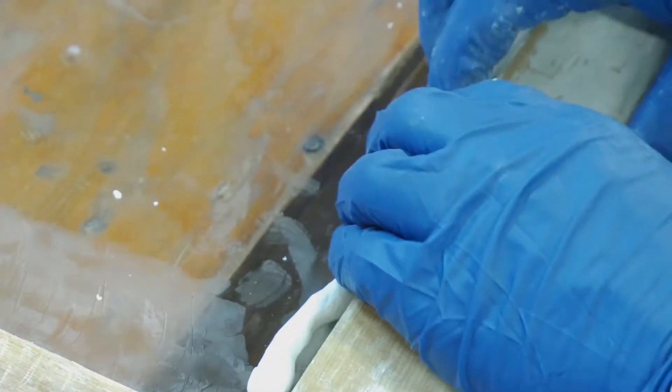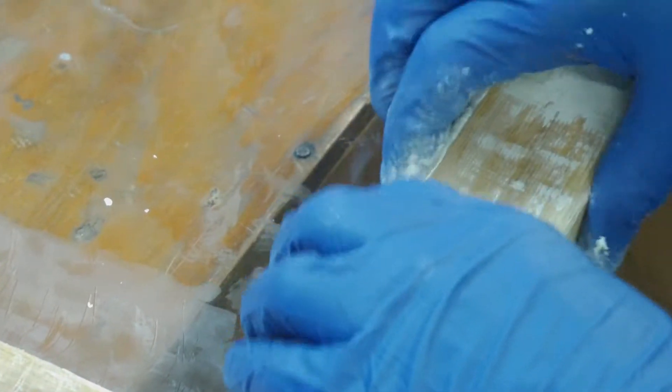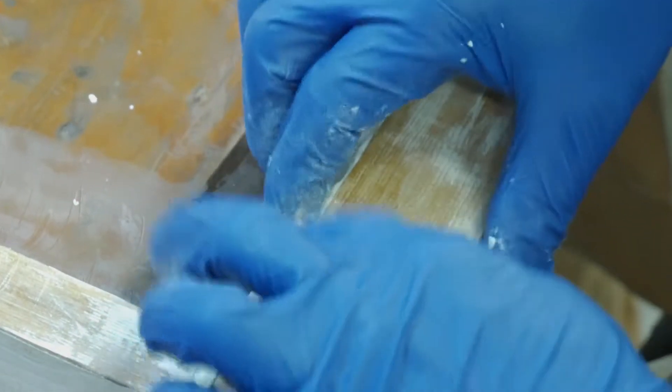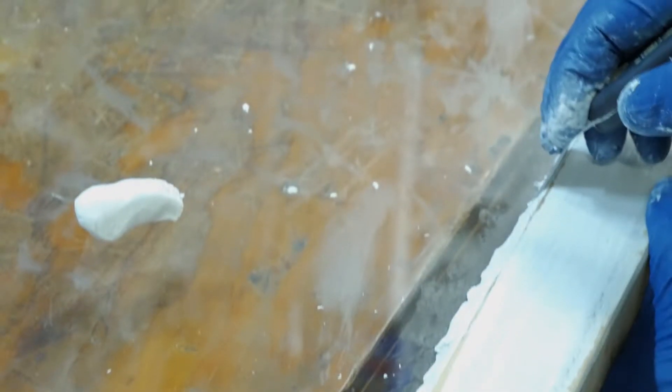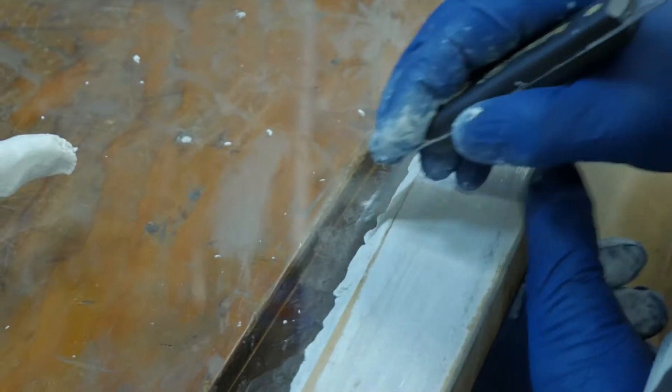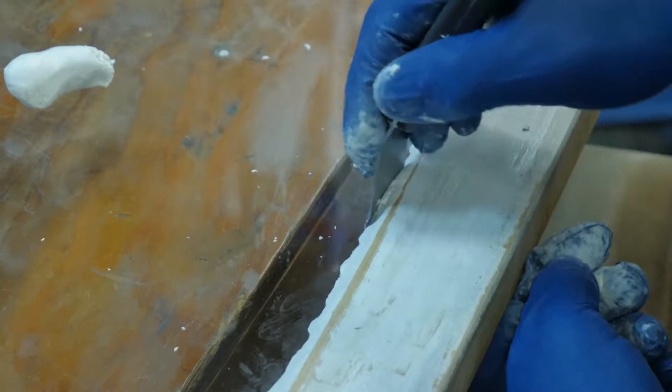One other key thing: make sure you wear gloves - this stuff gets in your fingers and it does not come off very easily. Then what I'm doing is I just go by with the knife here at about a 45-degree angle. You just want just enough putty there, and you're gonna scrape off some.